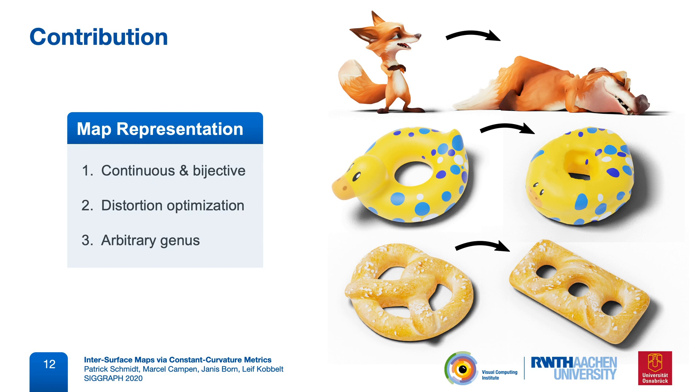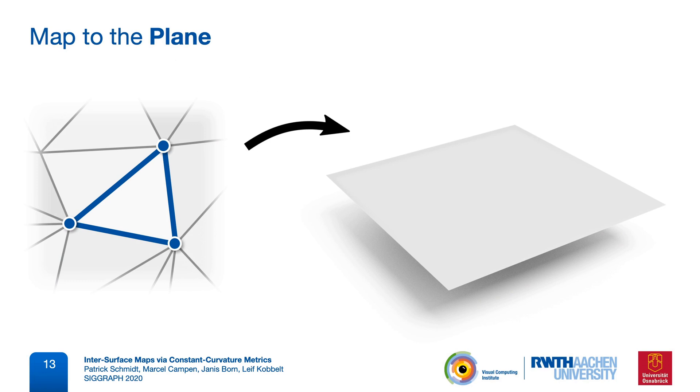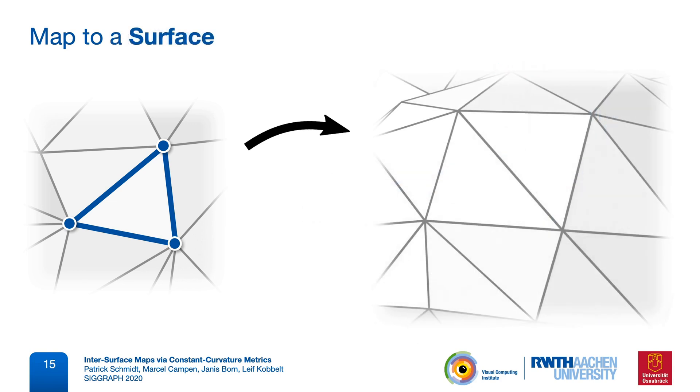To understand why finding a good representation of inter-surface maps is difficult, let's start by looking at maps to the plane again. We can represent such a map simply by specifying the images of vertices in the plane. If we choose a piecewise linear map, the images of edges and triangles follow from that implicitly by linear interpolation.